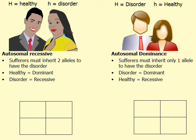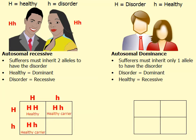Let's solve a couple of Punnett squares. For autosomal recessive on the left: if the father is heterozygous (capital H, lowercase h) and the mother is also heterozygous (capital H, lowercase h), filling in the Punnett square gives us one homozygous dominant child (healthy), two heterozygous children (healthy carriers), and one homozygous recessive child. The only way to actually have the disorder is to be homozygous recessive — lowercase h, lowercase h.